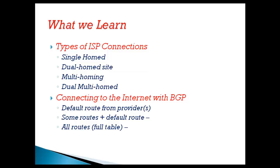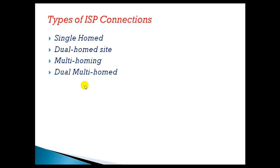In this video we are going to learn the different types of ISP connections. Depending upon the size of the company and the company's requirement, we can have different types of connections to ISP: single home, dual home, multi-homing, and dual multi-homing connections. We'll see the differences between these connections and which type of BGP configuration is more appropriate. Finally, we'll look at the different methods of connecting to ISP via BGP.